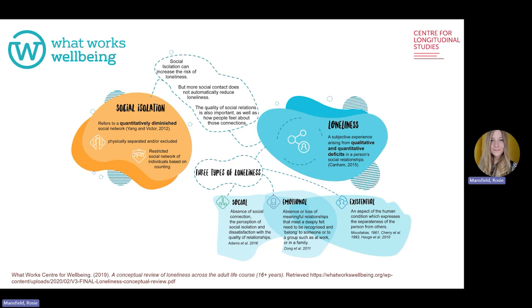Some background to the topic. Despite increased policy interest in the UK, there remains a need to better understand the conceptualisation and measurement of isolation and loneliness, as they're often inconsistently applied and interchangeably referred to across research, policy, and practice. For the purposes of this study, we define social isolation as an objective condition — quantifiable by network size or frequency of social contact. Loneliness, however, arises as a negative feeling associated with the perception of an inadequate quantity and/or quality of social relationships, and can therefore be experienced in the absence of isolation and vice versa.